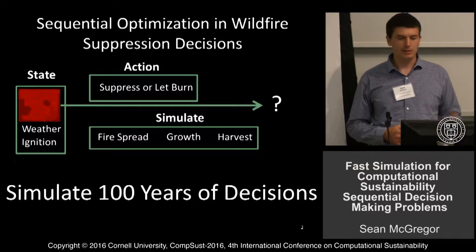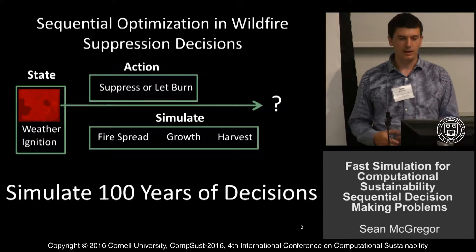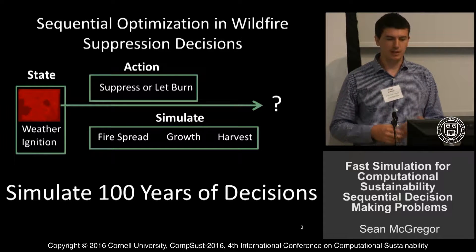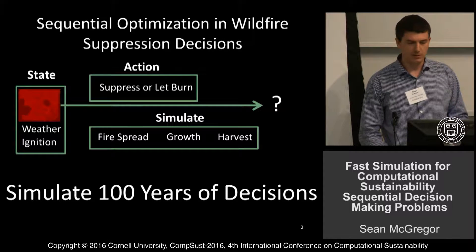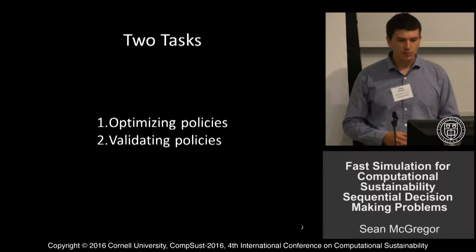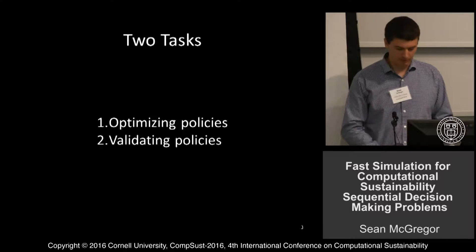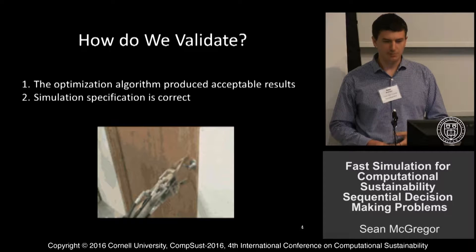We're presented with a landscape and ignition location as well as weather subjected to that wildfire. We make a suppression decision, then simulate the fire spread, and update the landscape with new vegetation through growth and timber harvest. We're doing this over 100-year time spans. The two tasks I'll concentrate on today are optimizing policies and validating policies, both of which are very important for simulation speed.